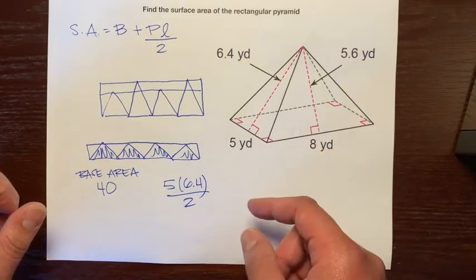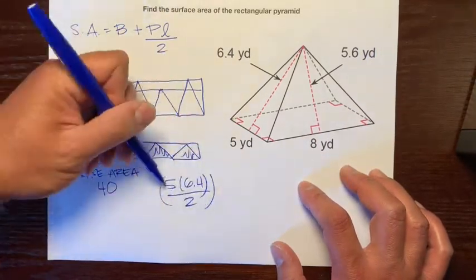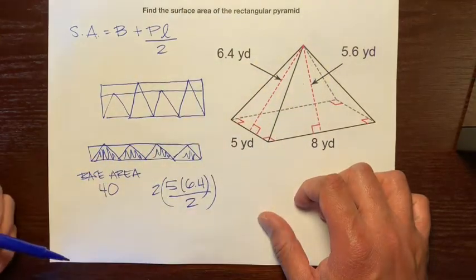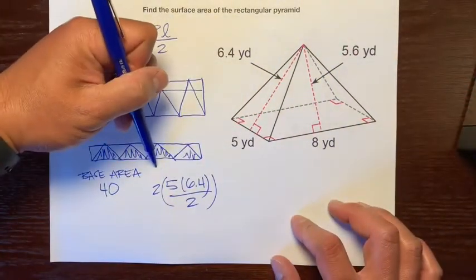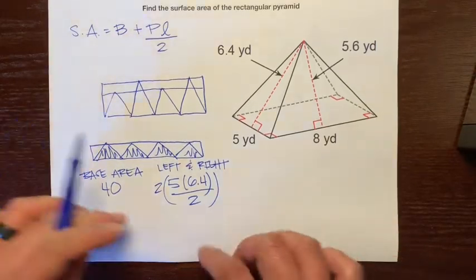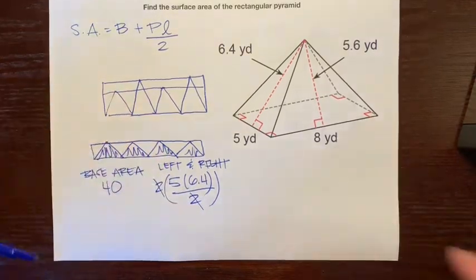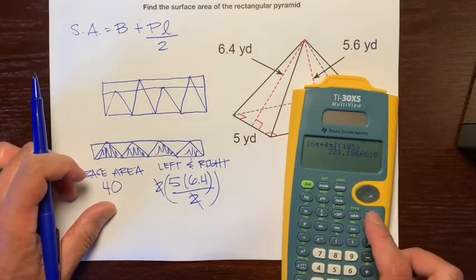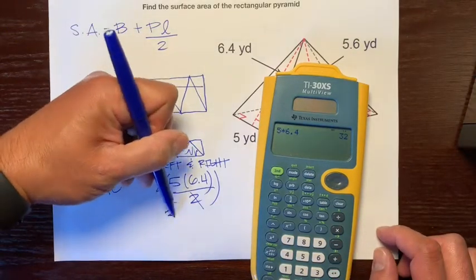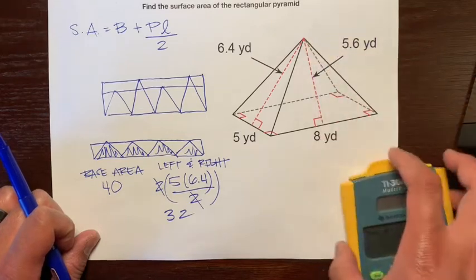Let's save ourselves some time because there's a congruent triangle on the other side, so let's multiply by 2 for the area of this triangle and the one on the other side — the left and the right. Let's simplify: we can cancel out these 2s. Since it's a decimal, let's use our calculators. 5 times 6.4 is 32, a whole number. So 32 is the area of the left triangle and the right triangle.